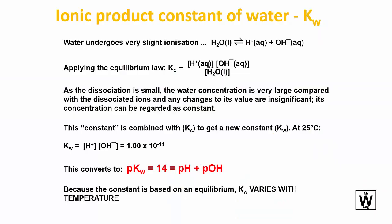Now what's helpful in working out these pH calculations when you're dealing with bases is something called the ionic product constant of water.